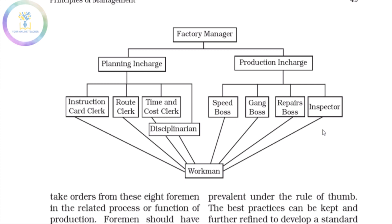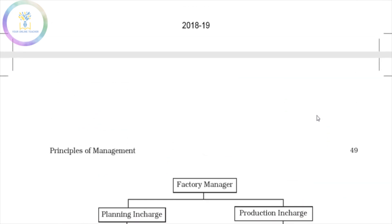F.W. Taylor proposed that one foreman cannot have all the qualities needed. So he suggested eight foremen. The eight foremen are: route clerk, instruction card clerk, time and cost clerk, disciplinarian, speed boss, gang boss, repair boss, and inspector.